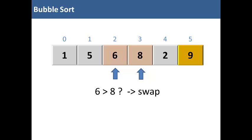Is six greater than eight? No. Is eight greater than two? Yes, it is. So we'll swap those two items. That completes our second iteration of the bubble sort.